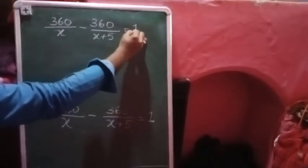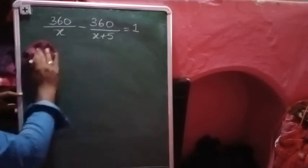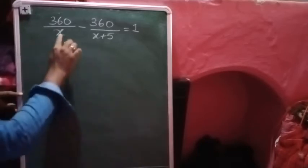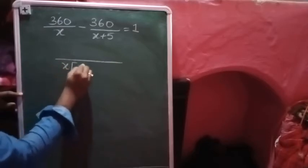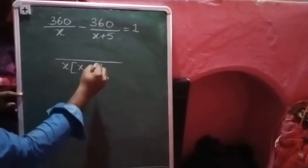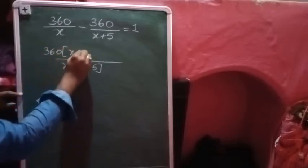Now we can solve this equation by taking the LCM. What is the LCM of this denominator? The LCM of these two will be x in the bracket x plus five.